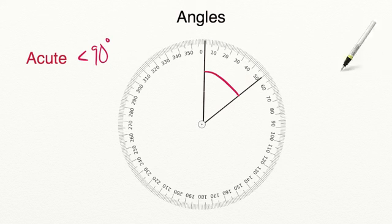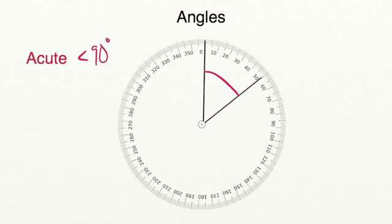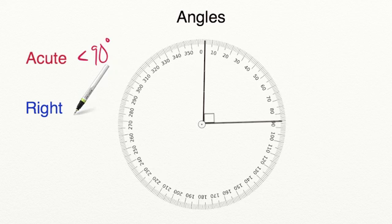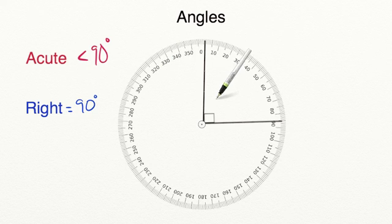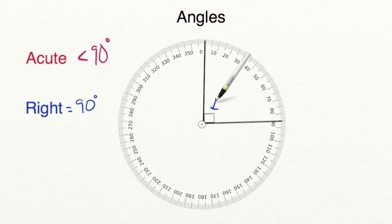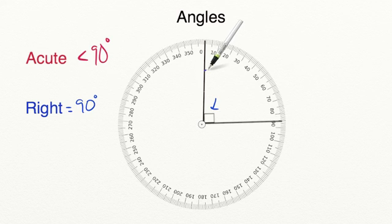But what would happen if we took this line and moved it all the way down to 90 degrees and increased the size of the angle? Well, we would no longer have an acute angle. A right angle is exactly 90 degrees. When you see a right angle, you will also see that it is usually written with a square in the corner. If the angle has a square in the corner, that's telling you that it's exactly 90 degrees. And as you can see, the angle looks larger than the acute angle.